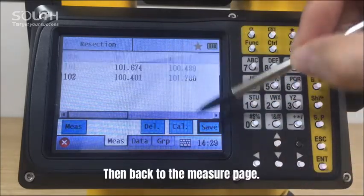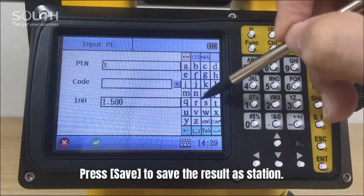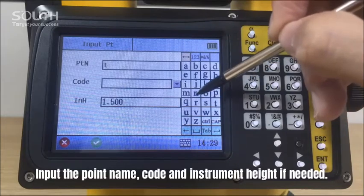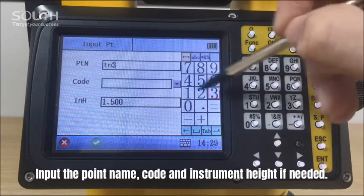Then back to Measure page, and press Save to save the result as station. Input the point name, code and instrument height if needed.